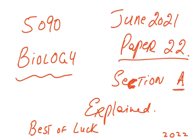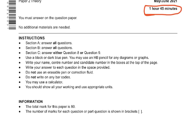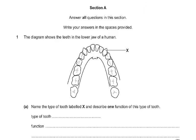Bismillahirrahmanirrahim. This is another video on the O-Level Biology Syllabus — Paper 2-2, which has been requested. This is the Section A explained. The time for it is 1 hour 45 minutes and total marks are 80. In Section A, you have to answer all questions and write your answers in the spaces provided.